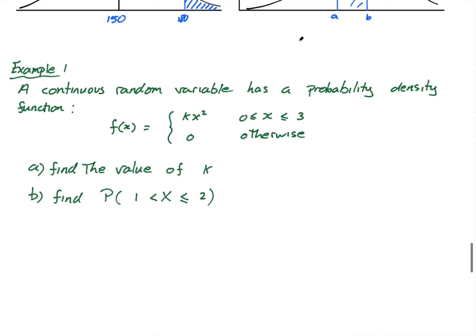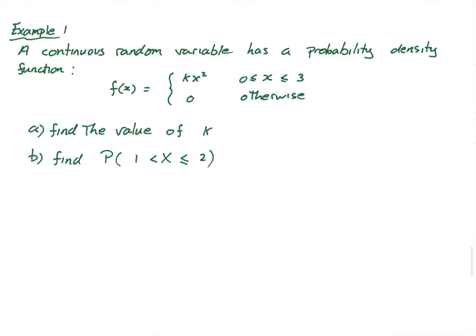Example one. A continuous random variable has a probability density function, PDF, of this: f(x) equals kx², for x between 0 and 3, and it's 0 otherwise.